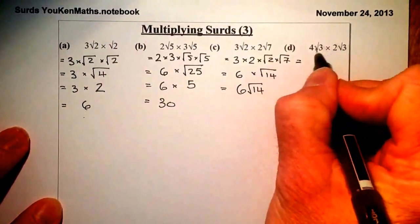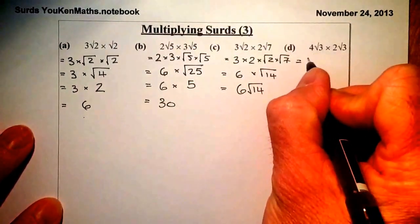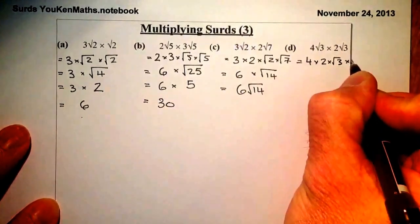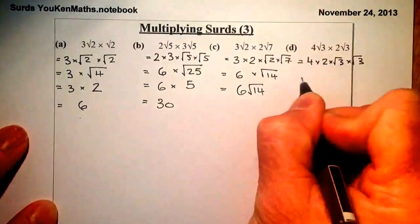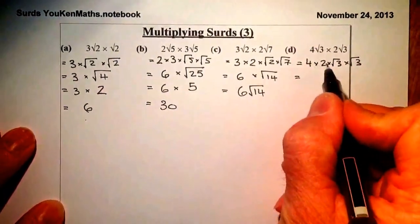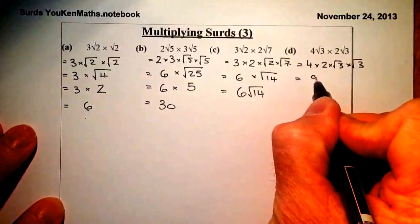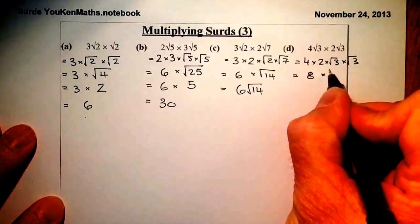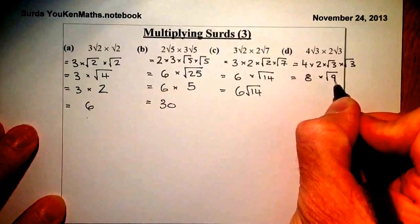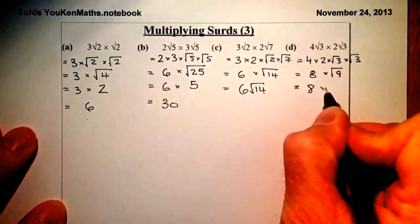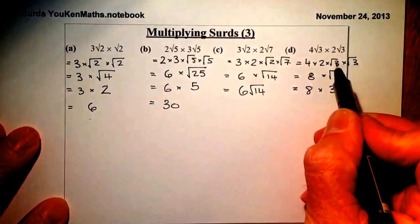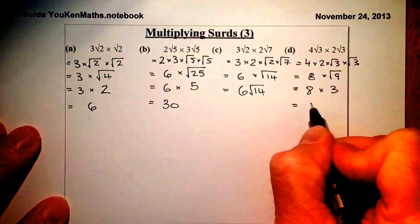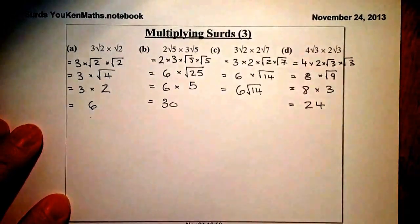For D, I've got 4 times 2 times root 3 times root 3. So 4 times 2 gives me 8, and root 3 times root 3 gives me root 9 — or straight to 3, since root 3 times root 3 is just 3. So the answer is 8 times 3, which is 24.